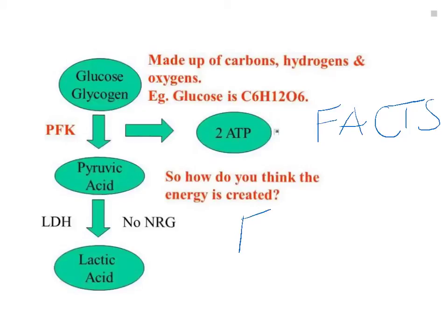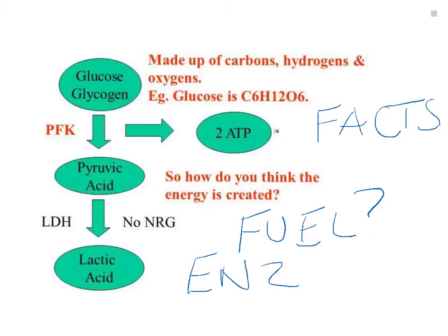What do you think the fuel is? What do you think the waste products are? What do you think the enzyme in this system is? It tells you there how much ATP is produced, and also, like we've done in the past when we looked at the ATP-PC energy system, see if you can maybe come up with some facts about the positives and the negatives of this system. Okay? Good luck.